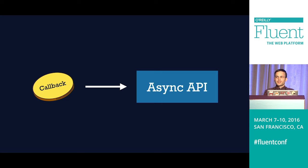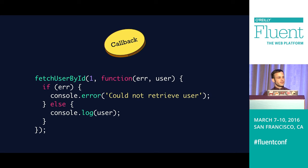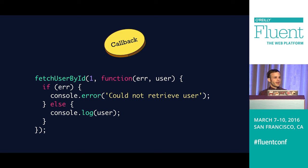The most well-known asynchronous pattern is the callback. Think of it as a token — I have some API that's asynchronous and will perform some action in the background. I need to keep making useful work happen, so I provide the API with this token, the callback. Once it's complete, it cashes in that token, allowing me to respond. Concretely, I can fetch a user by their ID and provide a callback that gives me either an error or the user.